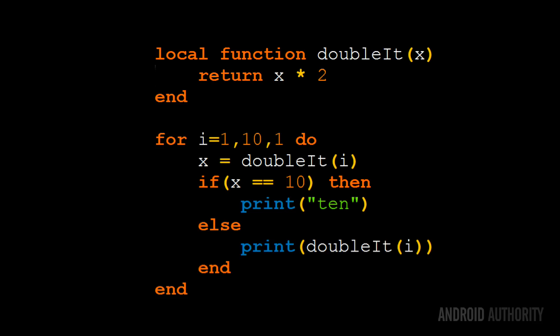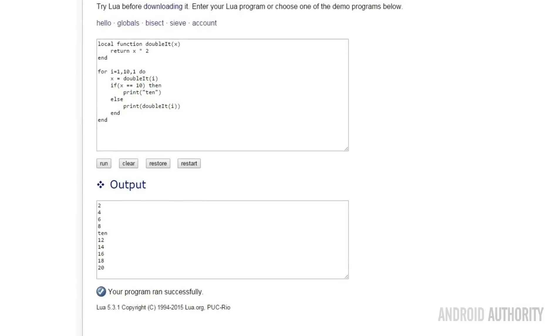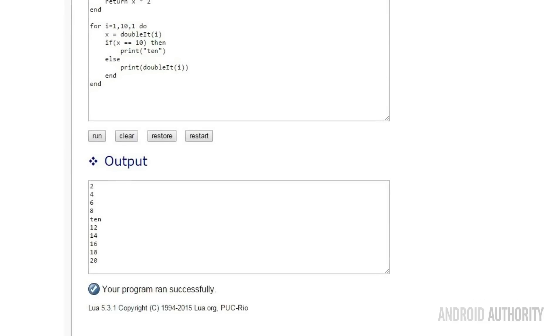Before we start writing the game, we take a whistle-stop tour of the Lua programming language. The interpreter is available for Windows, Linux, and OS X and is also built into the Corona SDK. The easiest way to play around with Lua is to use the online live interpreter — you'll find a link in the written companion. Here is a small Lua program showing some key features: functions, loops, and if statements. The function doublet simply doubles the passed-in parameter. The main code is a for loop which runs from 1 to 10 and calls doublet for each iteration. If the return value is 10, i.e. i is 5, then the code prints out the word "10"; otherwise it prints out the result of the doublet function.